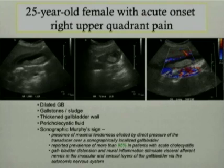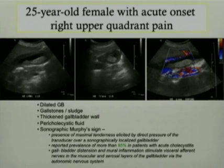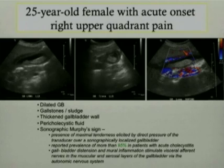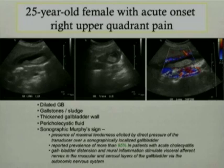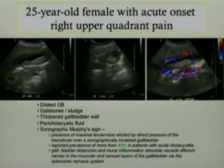Sonographic Murphy's sign is defined as the presence of maximal tenderness elicited by direct pressure of the transducer over a sonographically localized gallbladder. Murphy's sign can be demonstrated by physical exam also, but ultrasound helps you to identify the position of the gallbladder and elicit tenderness right over it, specifying the etiology to the gallbladder itself. The reported prevalence of sonographic Murphy's sign is more than 95 percent in patients with acute cholecystitis, making it the most specific sign in diagnosis.